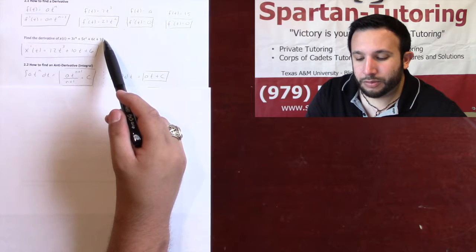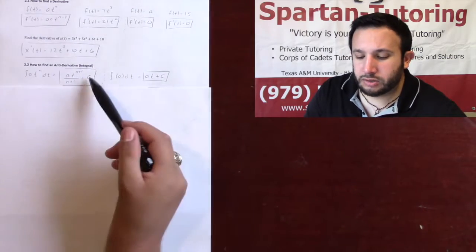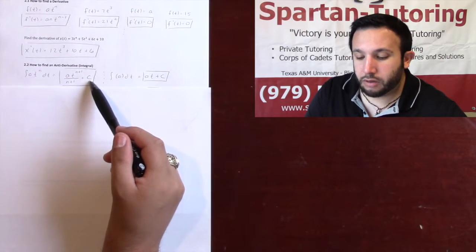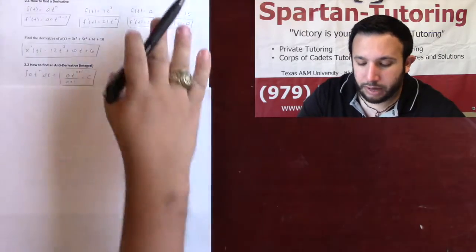The c is some arbitrary constant. It could be 0, or it could be 1, or it could be 2, or it could be 10. We don't know. Given initial conditions, we'll be able to solve for that. And we are going to be solving for this, for that plus c, that constant several times throughout kinematic problems.